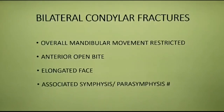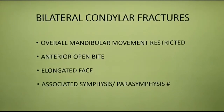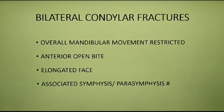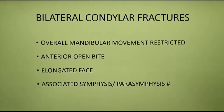In bilateral condylar fractures, all the signs and symptoms of unilateral fractures may be present on both sides, and overall mandibular movement is more restricted. If there is displacement of the condyles from the glenoid fossa or overriding of the fractured bone ends, an anterior open bite is present. Bilateral condylar fractures are frequently associated with fracture of the symphysis and parasymphysis. Also, the appearance of an elongated face may be a result of bilateral subcondylar fracture.